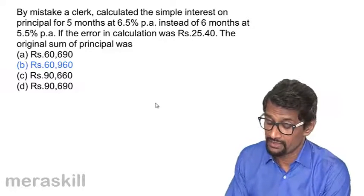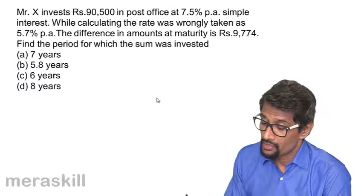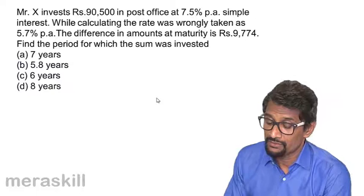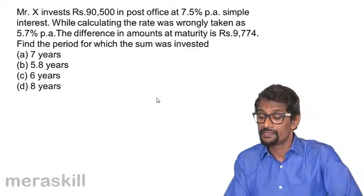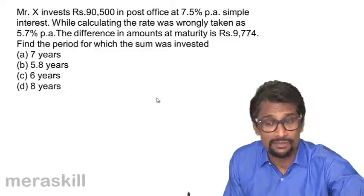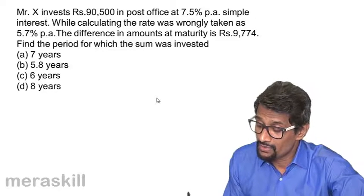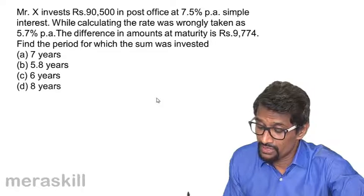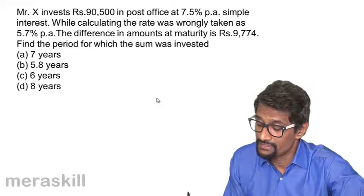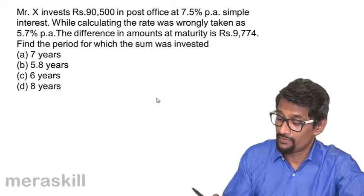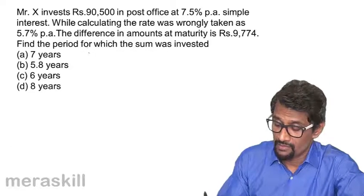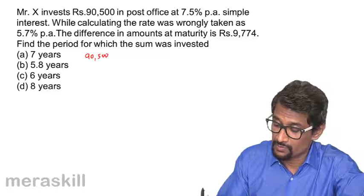So we have another one. Mr. X invests Rs. 90,500 in post office at 7.5% per annum simple interest. While calculating, the rate was wrongly taken as 5.7%. The difference in amounts at maturity is Rs. 9,774. Find the period.